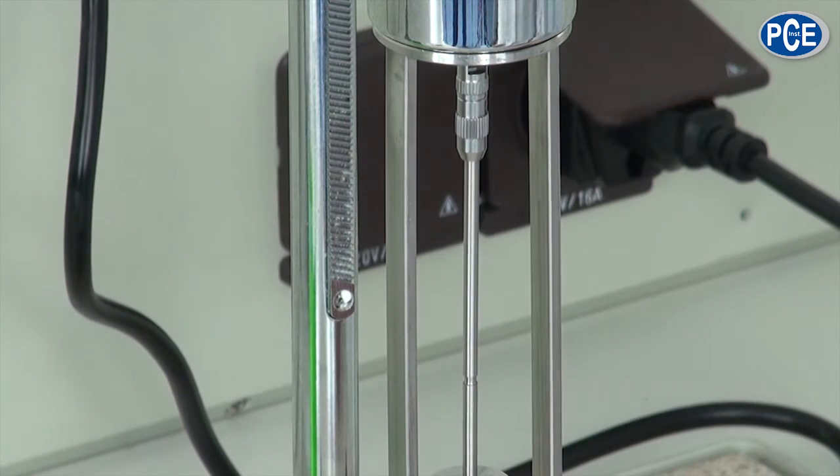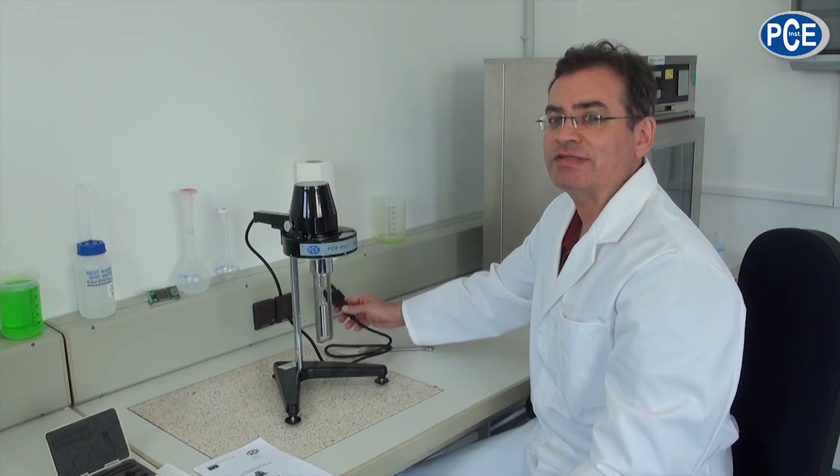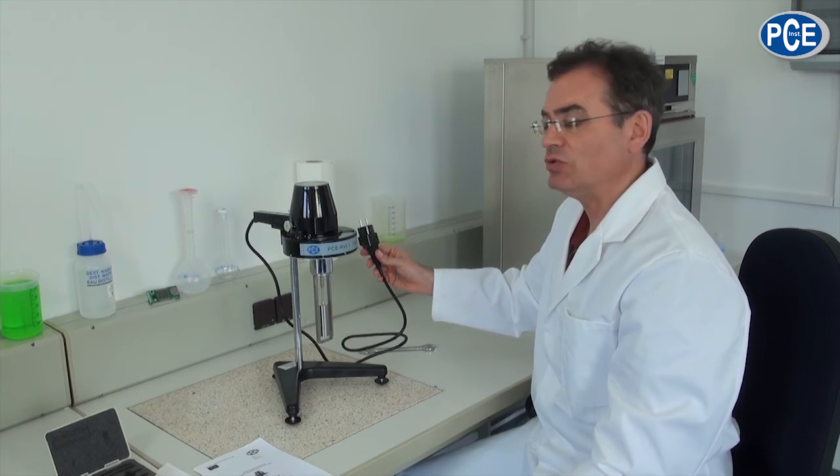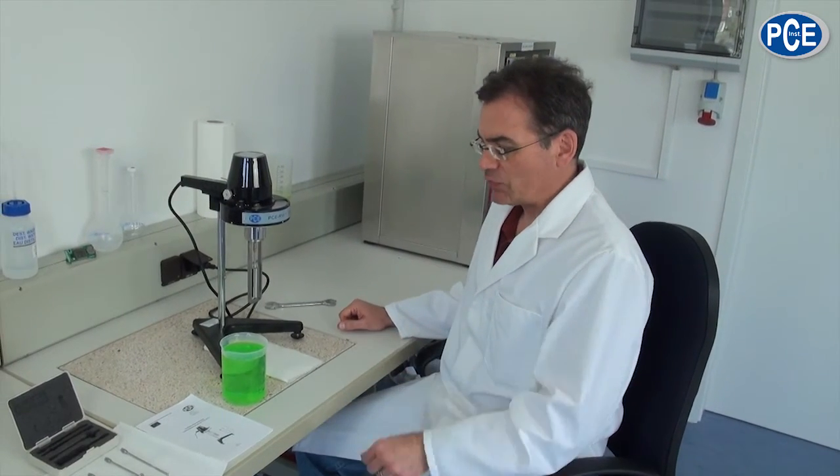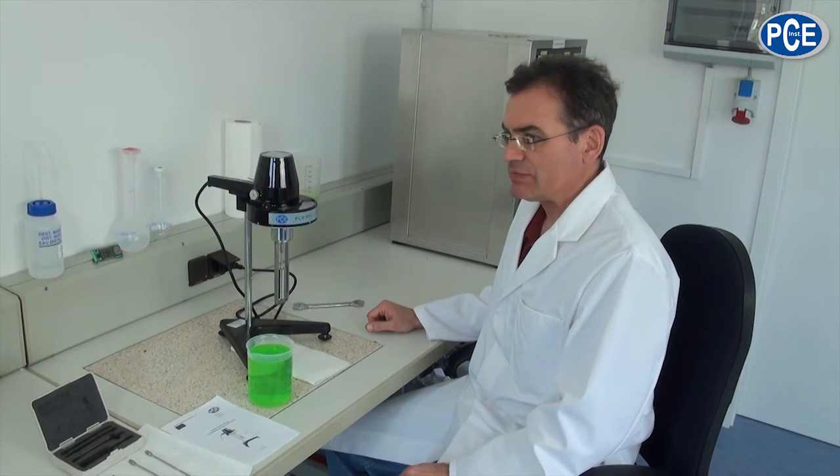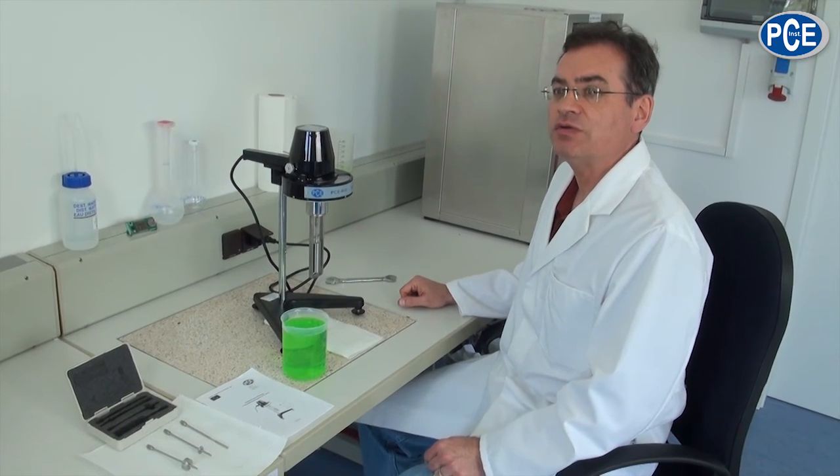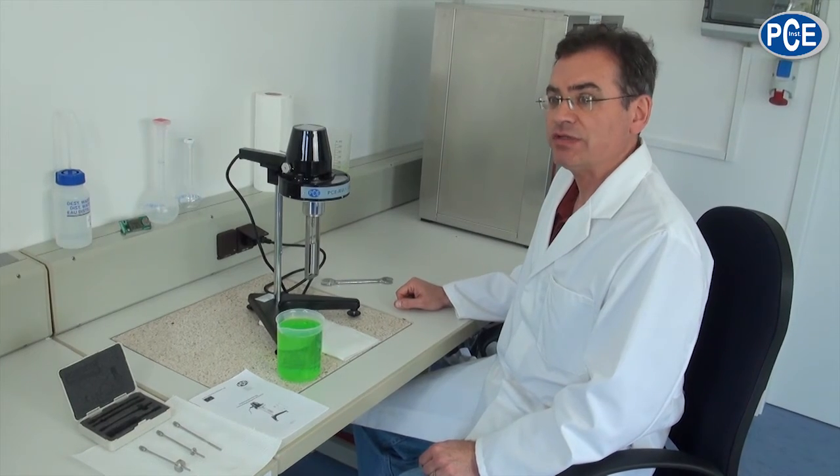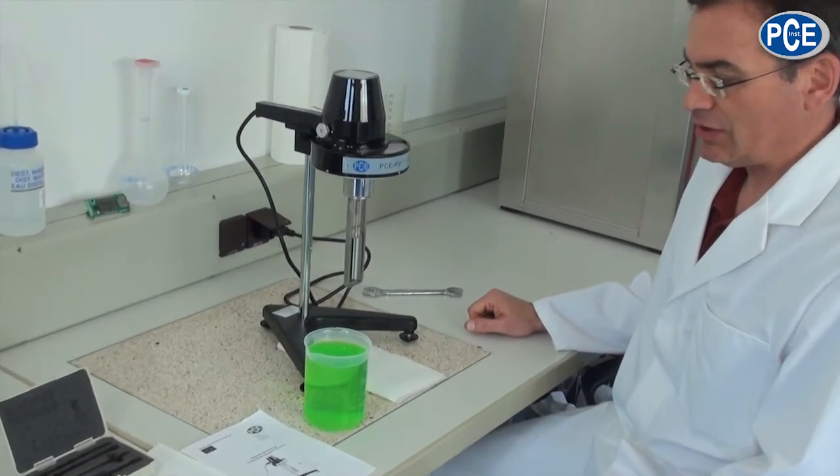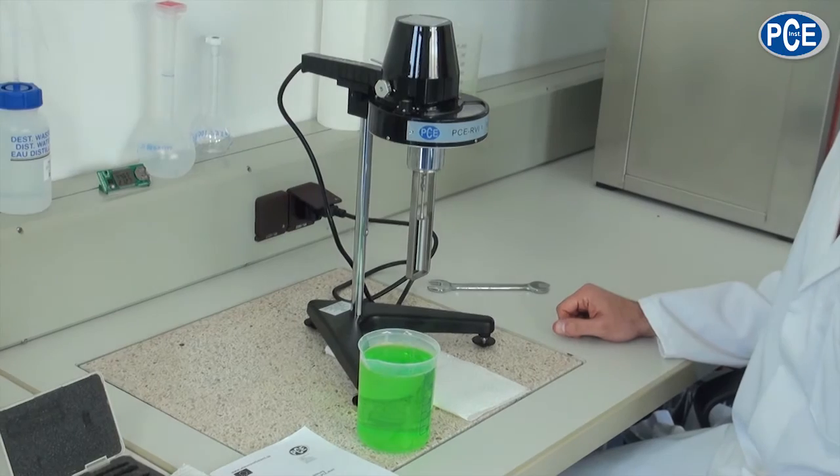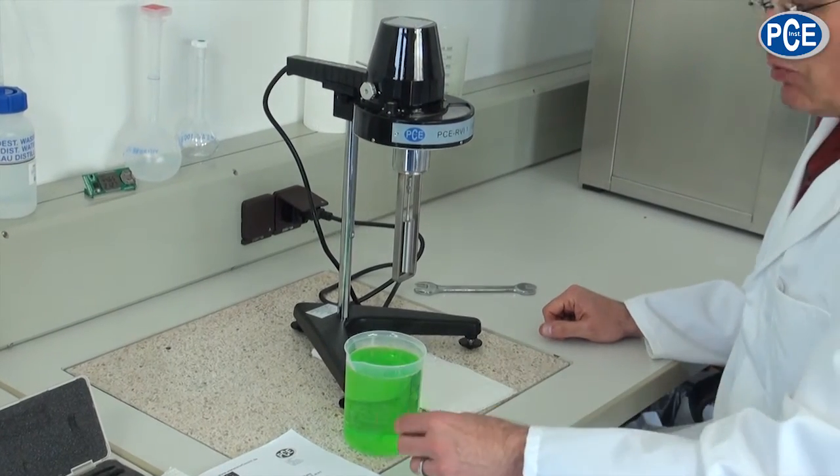And now the viscometer is ready to measure. For the first measurement the device is connected to the mains. Now we will do a measurement. For the probe we need a vessel with a height of about 130 mm and 70 mm diameter. This probe we have prepared. We put it underneath the rotation body.